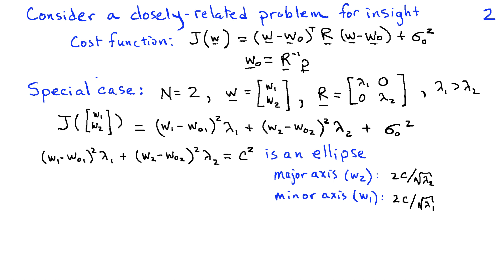And its minor axis is along the W1 direction, and the length of the minor axis is 2C divided by the square root of lambda 1. So this gives us the ability to visualize what J looks like. We can think about J for N equals 2 as the height above a plane. I'm going to have the W1, W2 axes here, so that's our plane, and then our cost function will be a height above that plane.